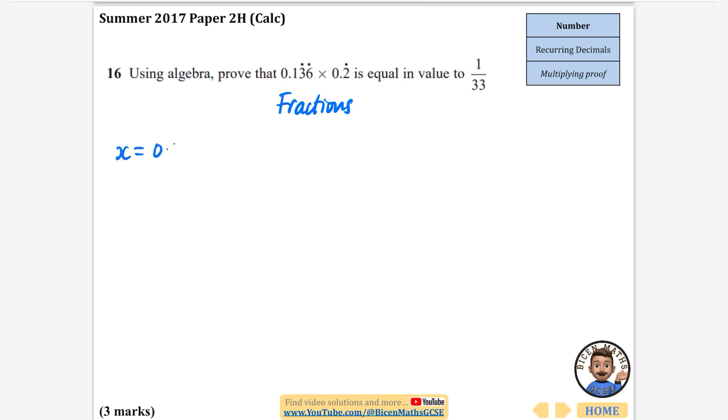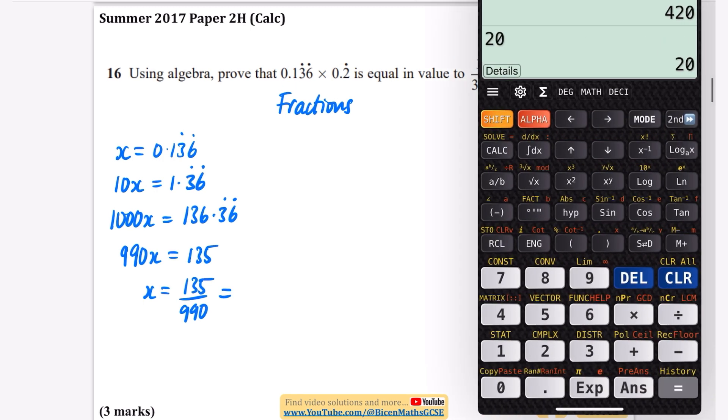This one is a little bit different because it wants us to do it with multiplication. The key for this one is we're going to change them both to fractions. I'm going to start with my x being equal to 0.136 recurring. If I do 10x I get 1.36 recurring. I'm then going to do 990... or 1000x. I've skipped a beat there. 1000x is going to be 136.36 recurring.